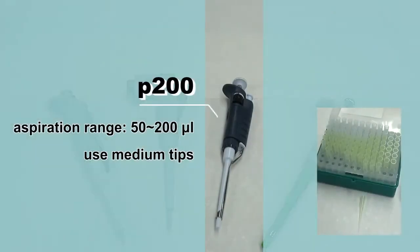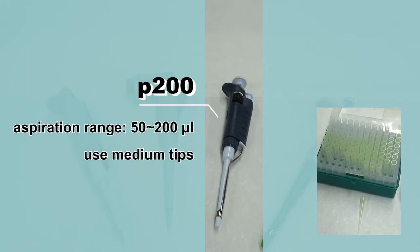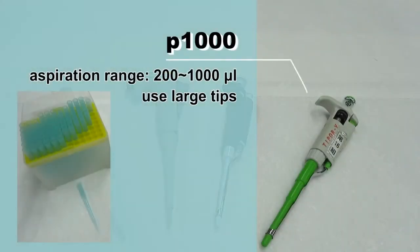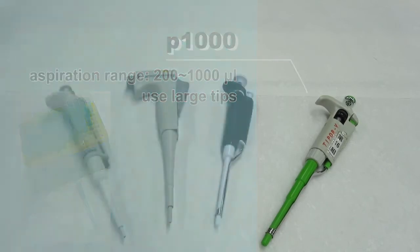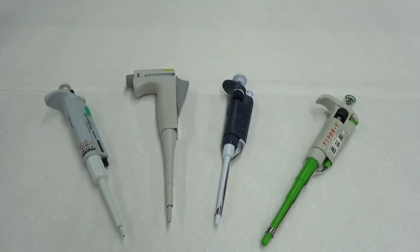The P200, which has an aspiration range of 50 to 200 microliter and also uses medium tips. Please choose the proper type according to the experiment.